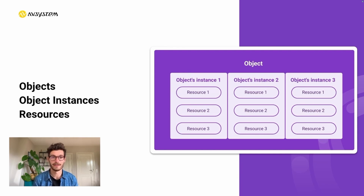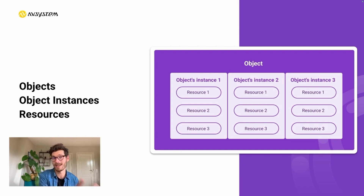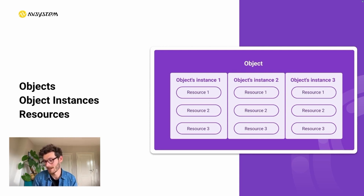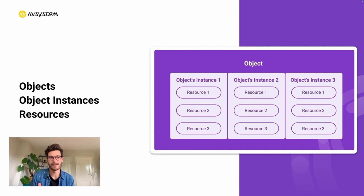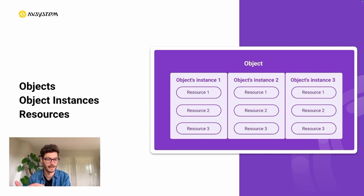Let's go one step further and deconstruct those objects. Say we're implementing a GPS module that collects location data — there's a standardized object for this called the location object, with public identifier number six. Each object contains at least one object instance, and some implementations have multiple instances. For example, if multiple GPS modules are implemented, it can distinguish between them through object instances. Each object instance contains multiple resources — for example, if you're sending location data, there's a specific resource for longitude, one for latitude, and another for altitude.